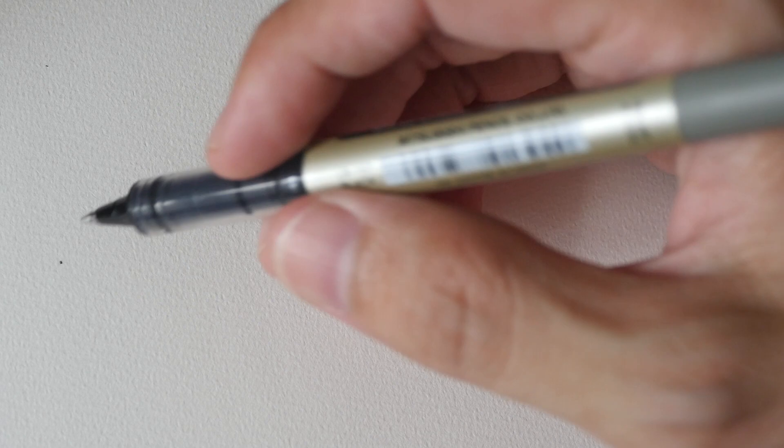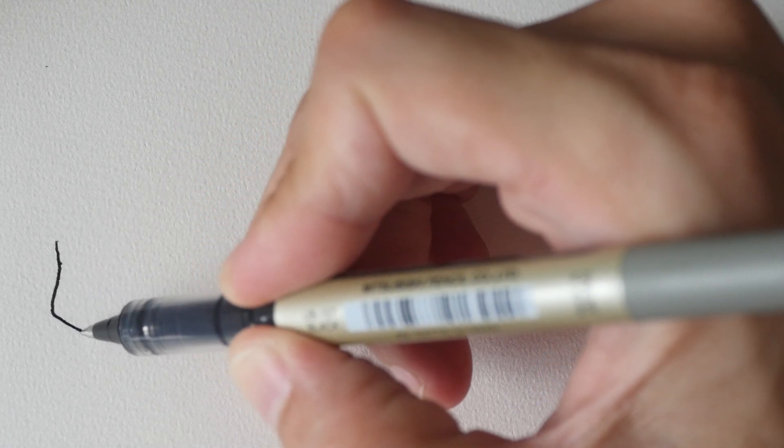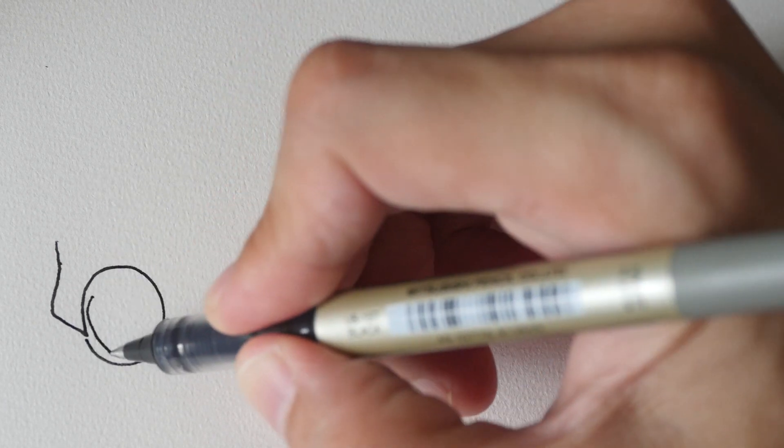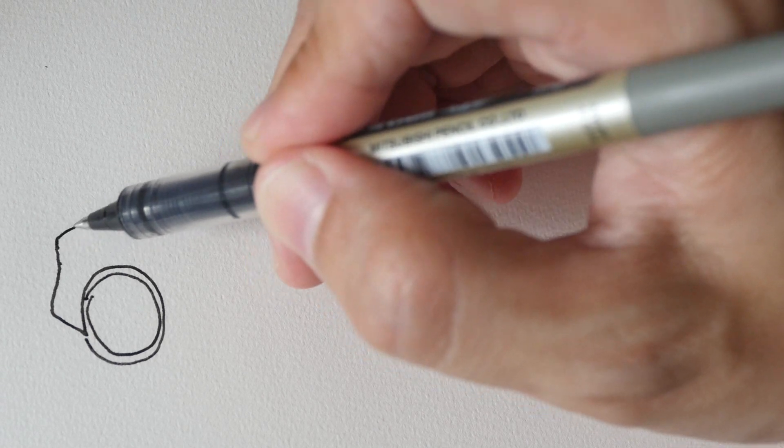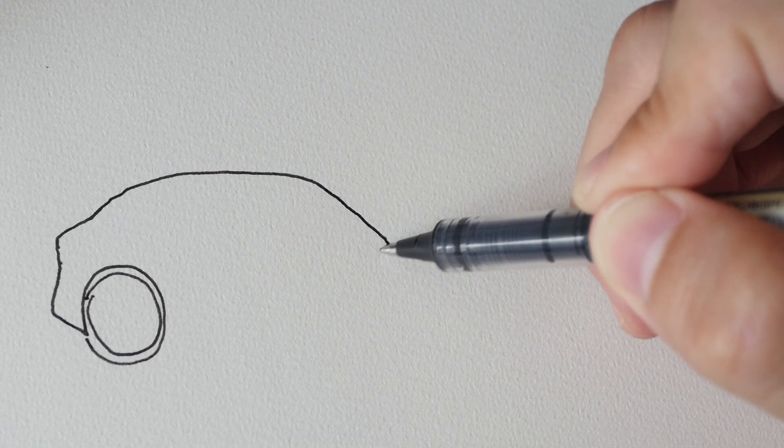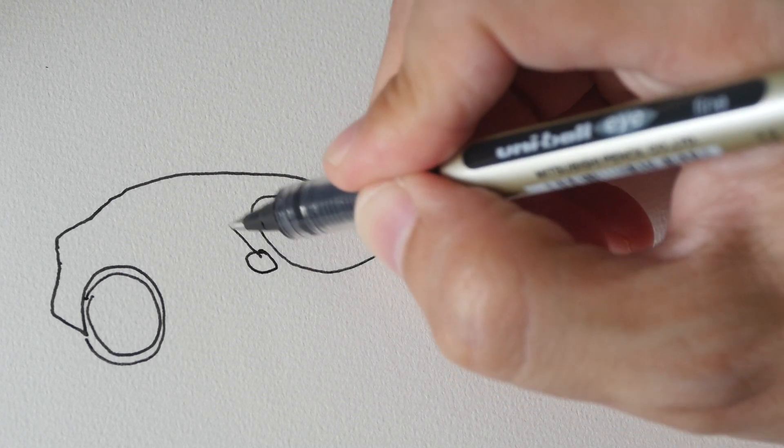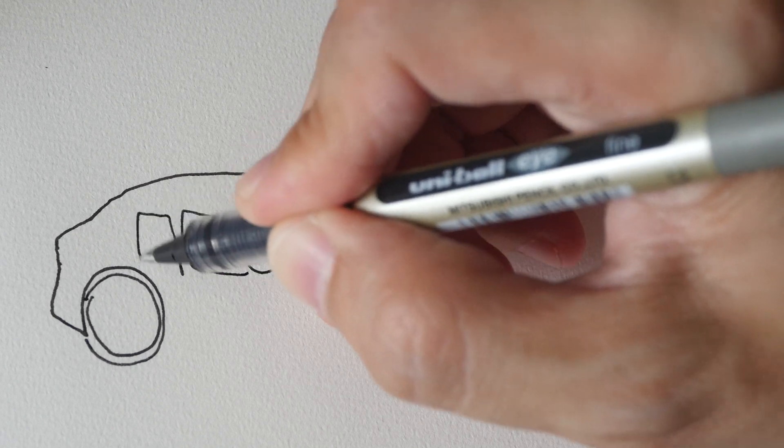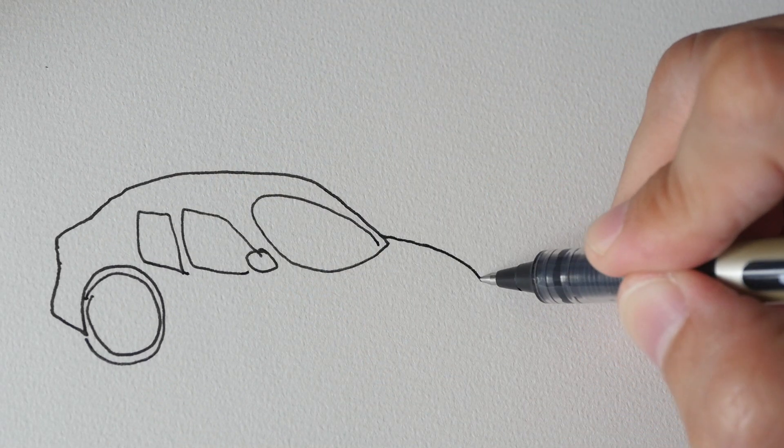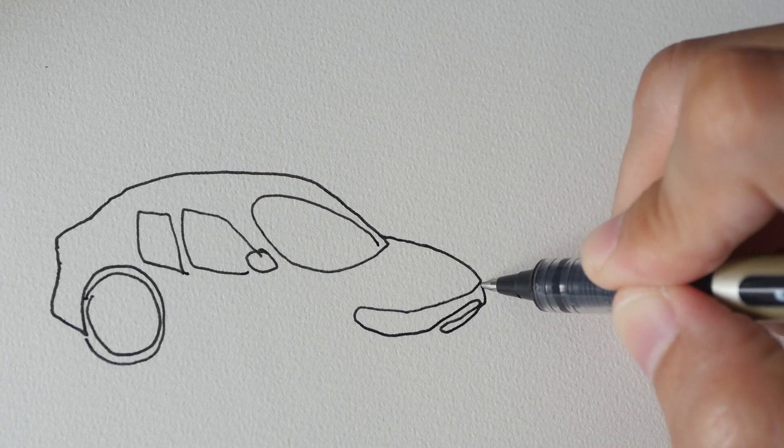The reason why I have pens of different line width is because the different line width makes it easier to give an impression of foreground versus background. With the thicker lines I can use it to draw foreground elements and the thinner lines I would use to draw background elements and it will give a slightly better clarity to the sketch when it comes to depicting subjects.